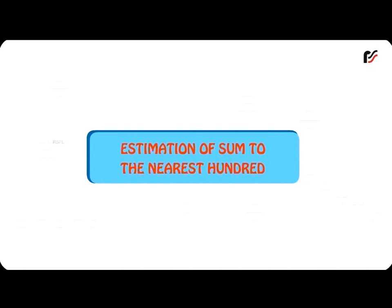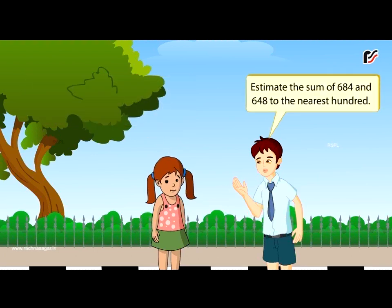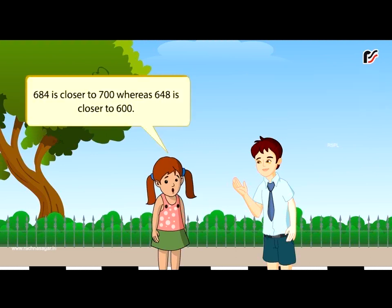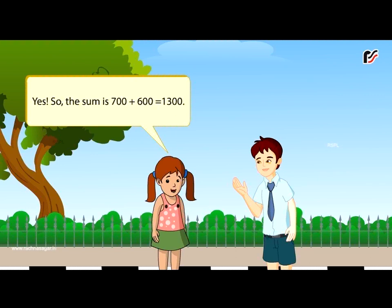Estimation of sum to the nearest hundred. If you don't need an exact answer, you can estimate by rounding numbers. Estimate the sum of 684 and 648 to the nearest hundred. You mean 684 can be rounded as 700 and 648 can be rounded as 600. Yes, so the sum is 700 plus 600 is equal to 1,300.